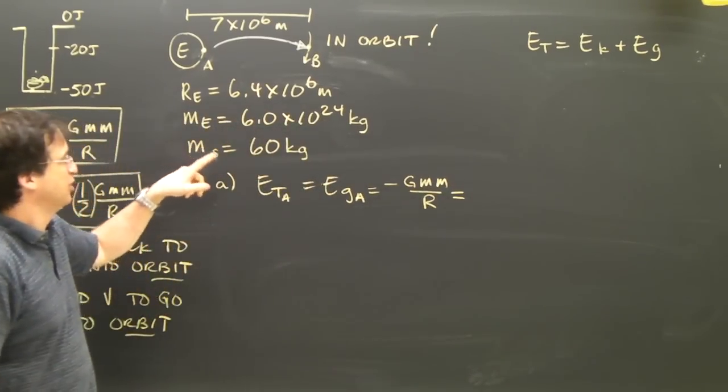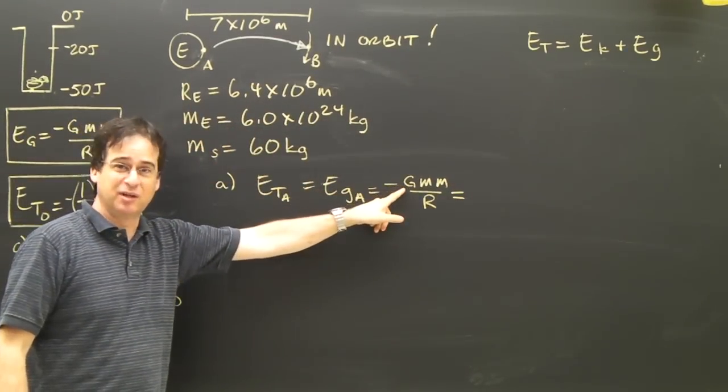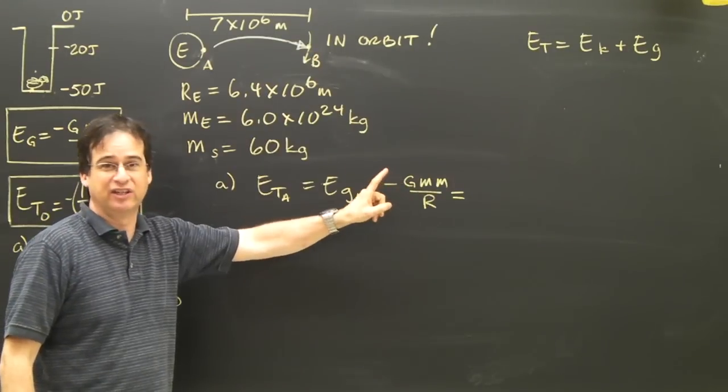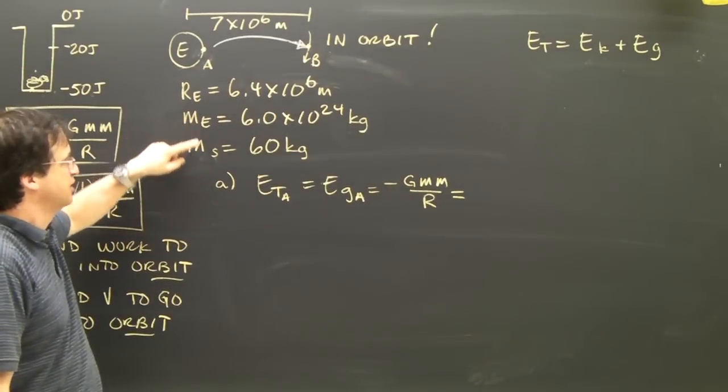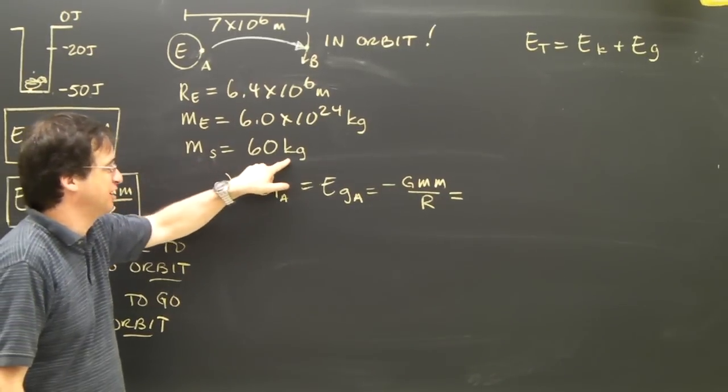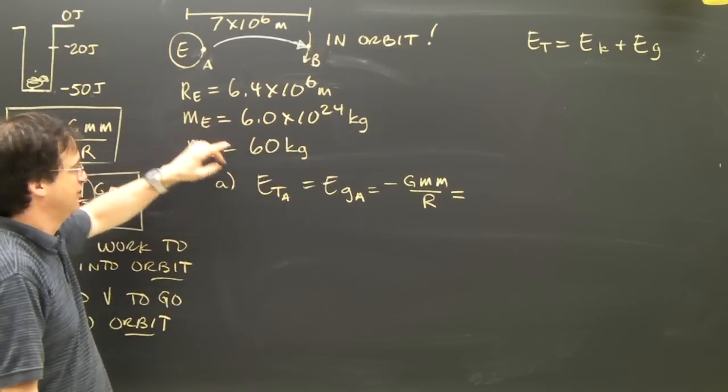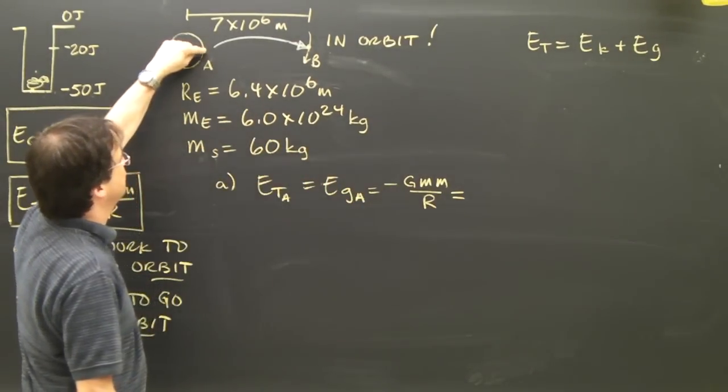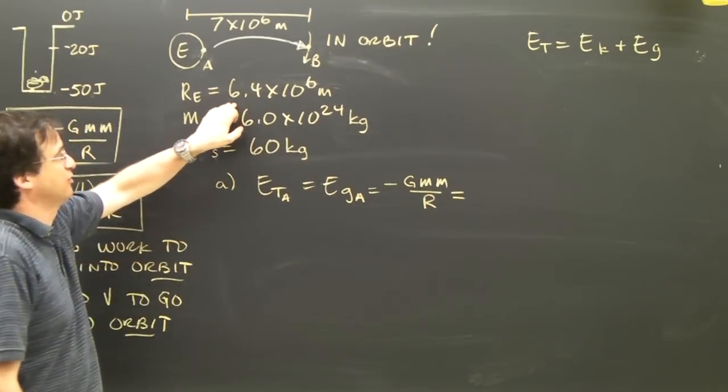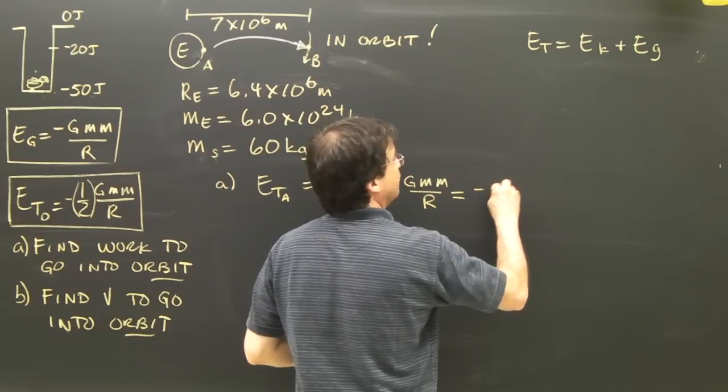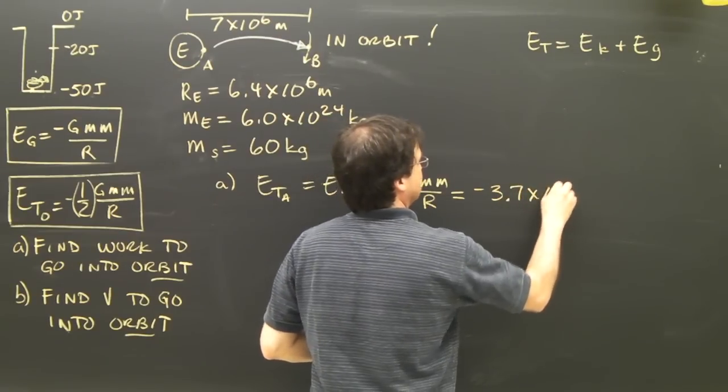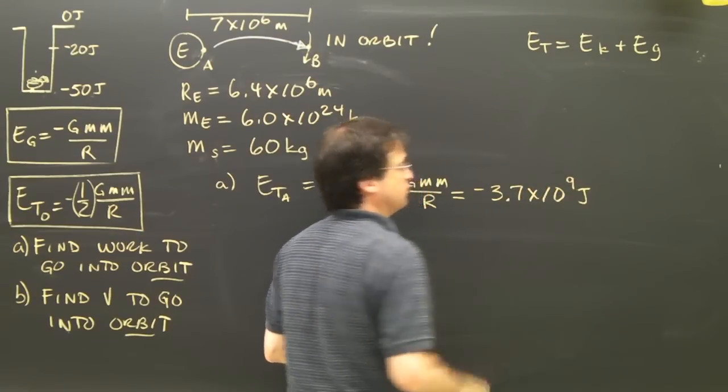And I'm going to use 6.67 times 10 to the minus 11 for the gravitational constant. M is going to be the mass of the Earth times the mass of the satellite, which is 60 kilograms in this case. And what r do I use? Well, that's the surface of the Earth. The distance from the center of the Earth would be the radius of the Earth. So I'm going to use that r. If you calculate it, you should get negative 3.7 times 10 to the 9 joules.